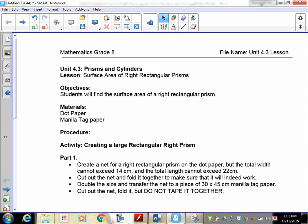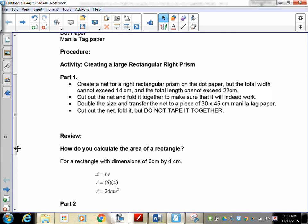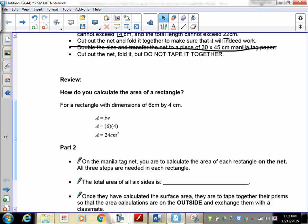So your first job is going to be able to create your own rectangular prism. I want you just to create one. I've given you some dot paper, so what I'd like you to do on the dot paper is to make sure that your total width does not exceed 14 cm, and the total length does not exceed 22 cm, because if you do that, you have a hard time making sure it'll fit on top of your dot paper. So I'd like you to take and create that and cut it out, and then I want you to transfer it. Now this one here says to double its size, but I'm not going to have you double it. I just want you to transfer it onto the manila tag that I've given you, and basically trace it in place, and then cut it out. Don't fold it. Just sort of, if you want to fold it, you can fold it, but don't tape it together, because we're going to be using this as a learning tool in a second. So create that for me, and then transfer it onto the manila tag. You can crease the folds, but then stop before, and do not tape it together. So pause the recording and do that.